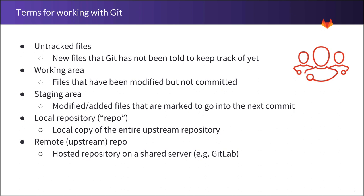From there, we can commit them with a message describing our changes to the team. Once we've committed them, those changes and the message are in the local repository — the local copy of the entire Git repository that lives inside our workspace. When we push them to an upstream repository, we call that the remote repository, or remote repo. This is a hosted repository on our shared server, using server-side software such as GitLab.